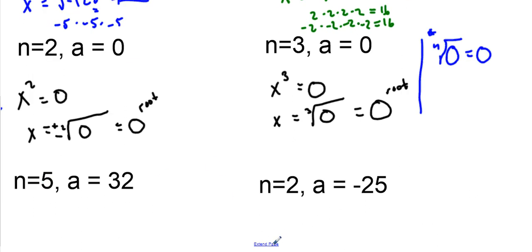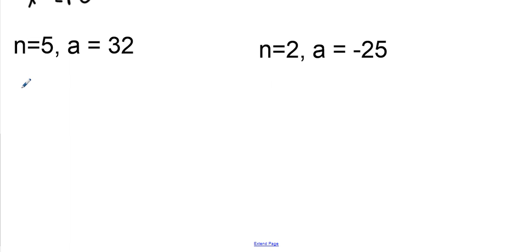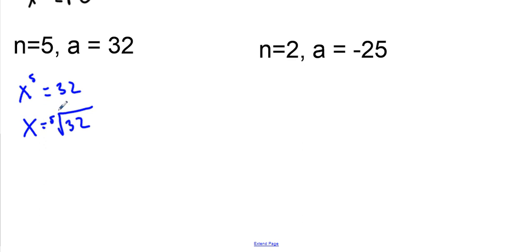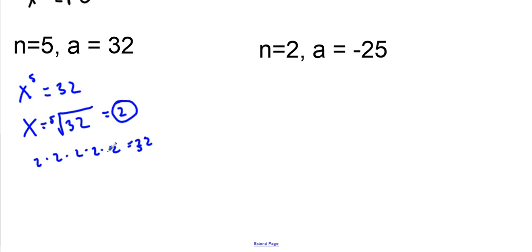Let's try some more. x to the fifth power equals 32 — this is a popular one. We take the fifth root of 32. We don't bring a plus or minus because it's an odd value — you only have one solution. 2 × 2 × 2 × 2 × 2 equals 32, so our answer is 2, because 2 to the fifth power equals 32, and that's what we're looking for.